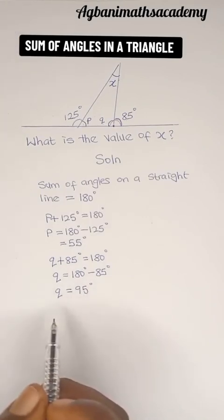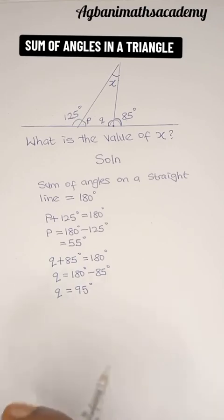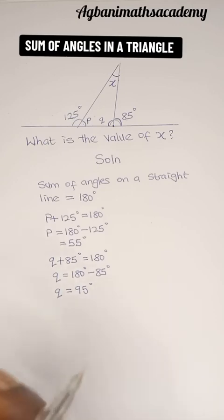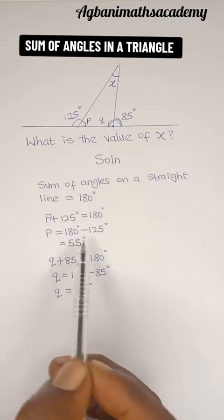Now we know the value of P and we also know the value of Q. Therefore, we can easily find the value of X applying sum of angles in a triangle. We know this angle as 55 degrees.